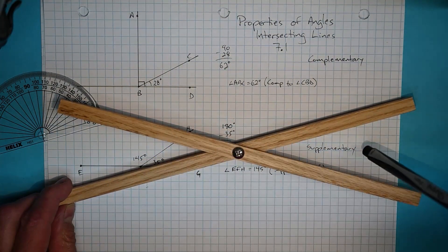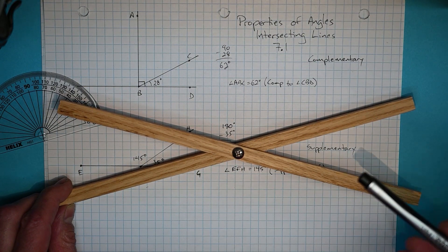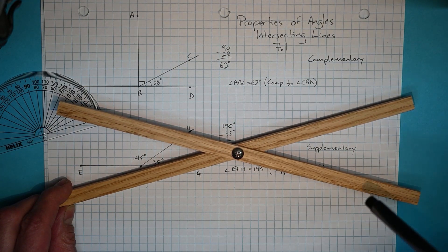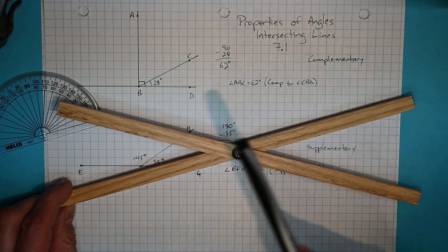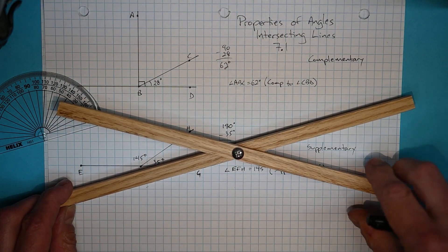And because they're on opposite sides of the intersection, this property is called opposite angles. Basically, if you know one side, you can claim to know the other side because it's opposite.